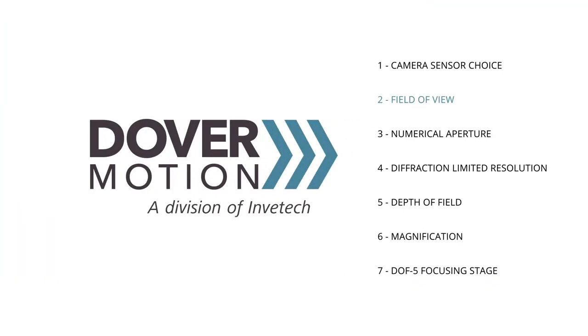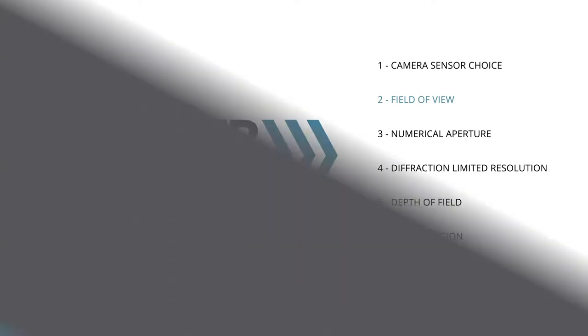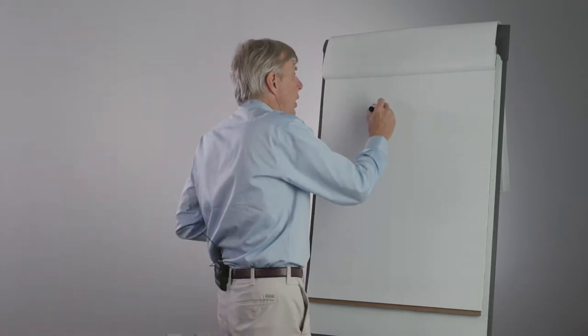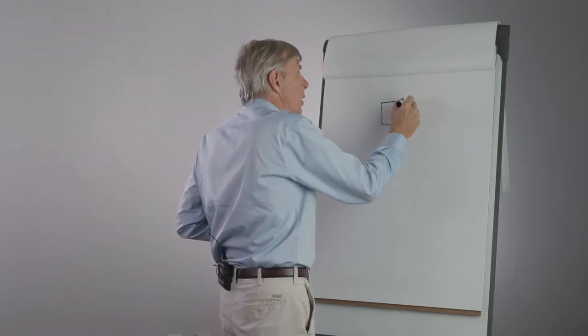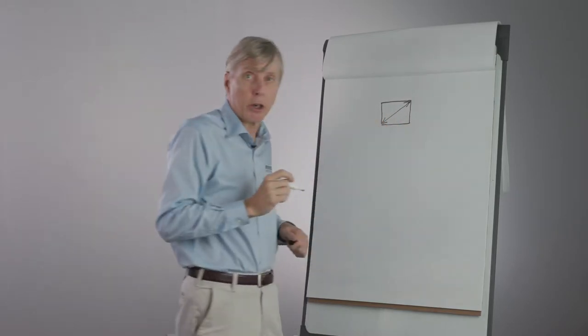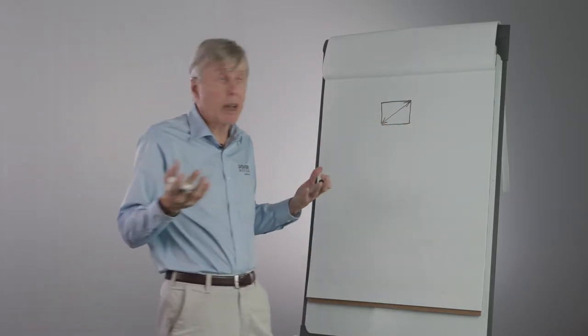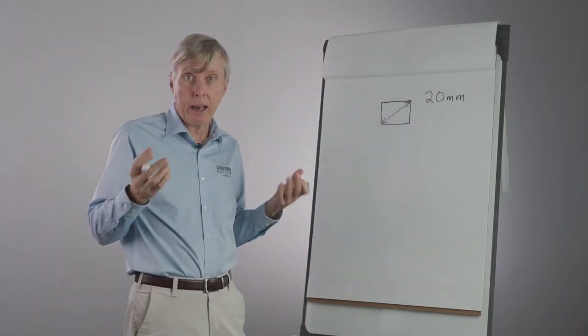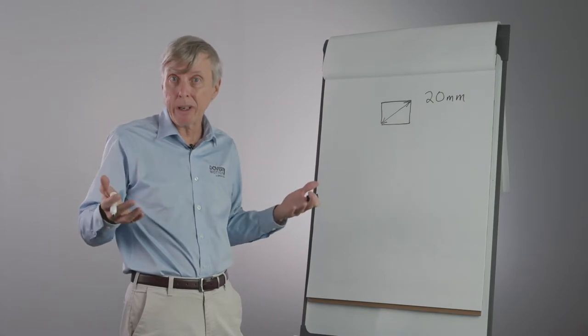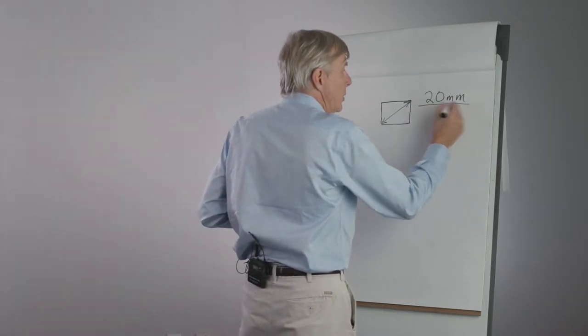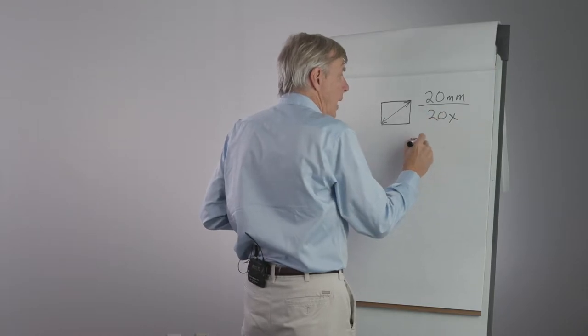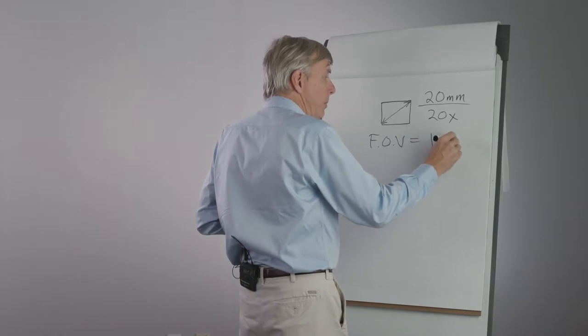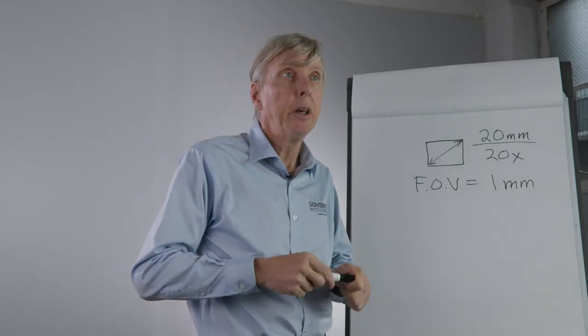In all of these cases, the sensor is going to have a particular size, and we generally talk about the diagonal measure. So for a sensor, they may in many cases be rectangular. We're really looking at the diagonal measure. And if the sensor diagonal was, say, 20 millimeters, and if the magnification of the objective was 20x, then we simply divide the two, and we have a field of view of one millimeter. And that's fairly typical for microscopy applications.